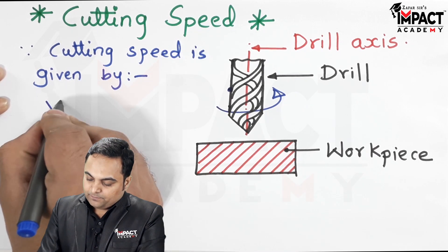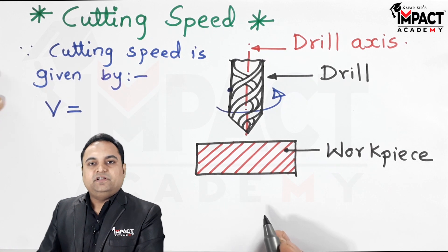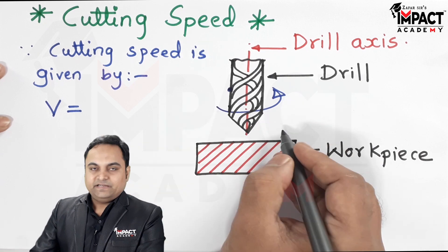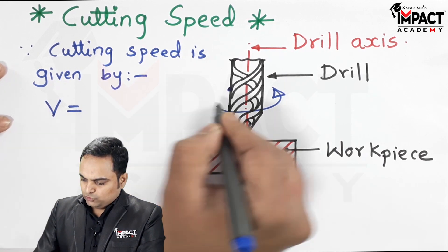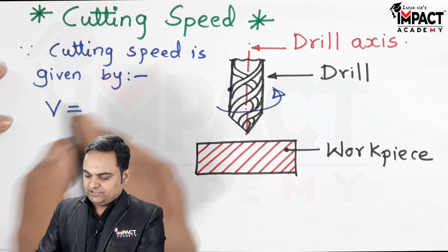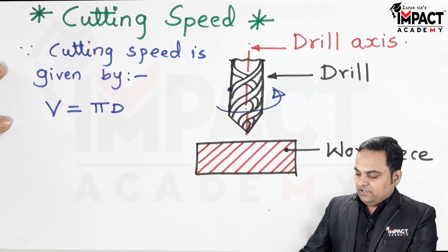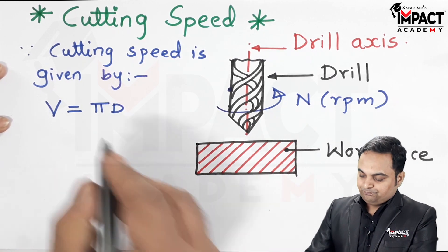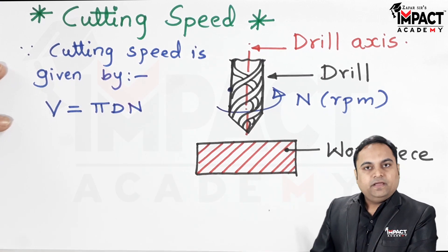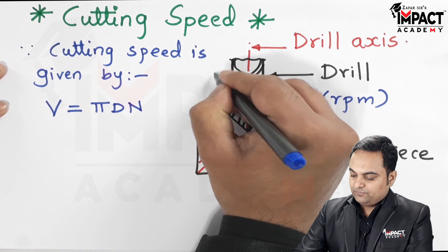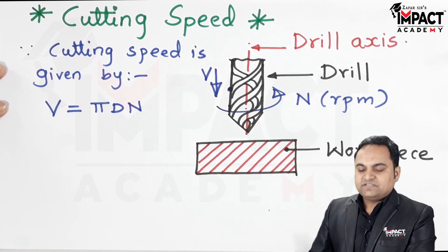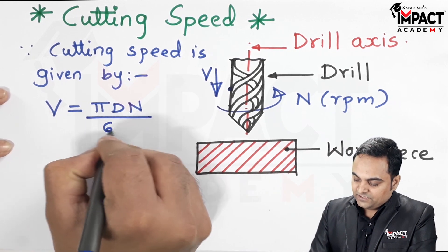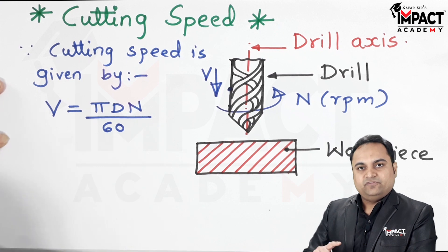I'll be denoting the cutting speed by velocity V, because it is basically the linear velocity. Now if the diameter of the drill is indicated by capital D, the distance covered in one rotation is πD. If this drill is rotating with N rpm — that is, revolutions per minute — then πDN is the linear speed of this drill in meters per minute. Dividing by 60 gives the answer in meters per second.